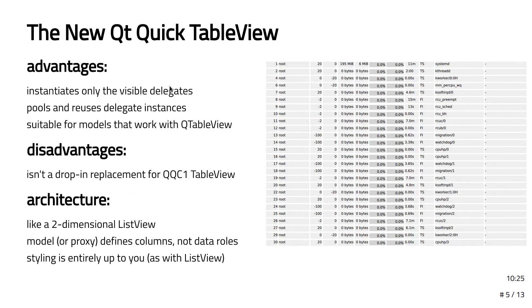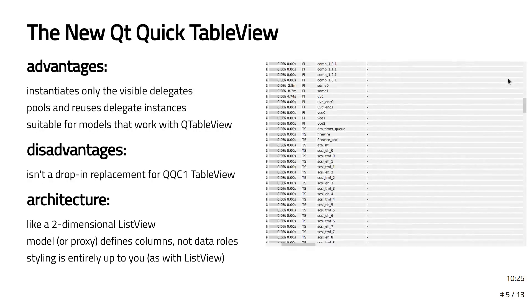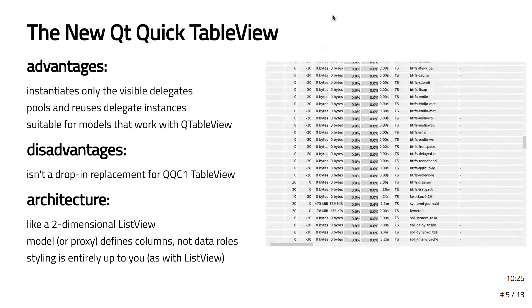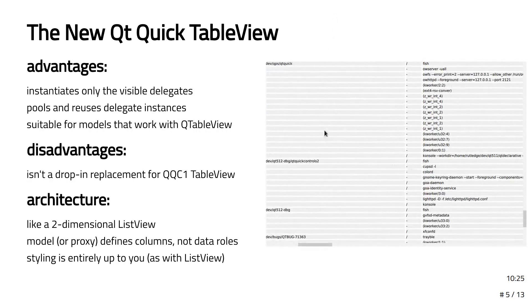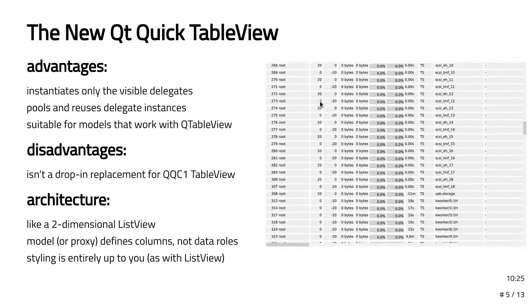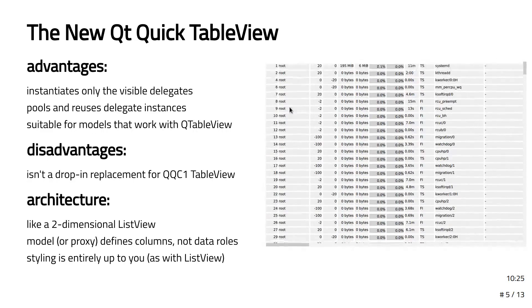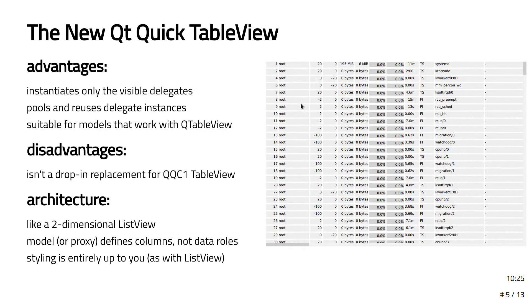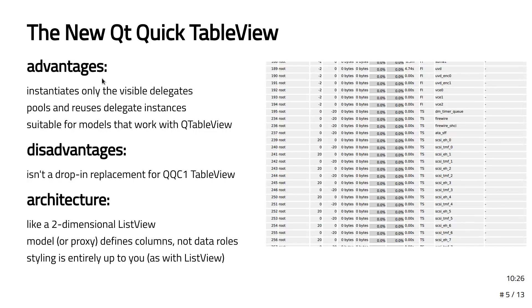Now we have the new Qt Quick TableView introduced in 5.12, and the big advantage is performance — you can actually smoothly scroll through. The reason it works so well is that each individual cell is a delegate instead of the entire row being a delegate. So we only have to instantiate the number of items that you can actually see in the viewport, and instead of creating and destroying them as you scroll, it actually pools and reuses delegate instances, then just changes the bindings as you go through.